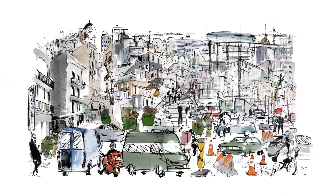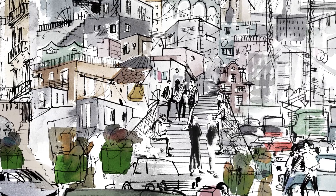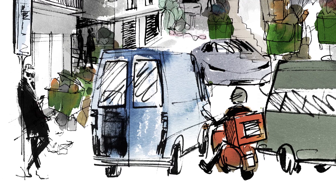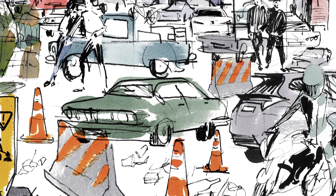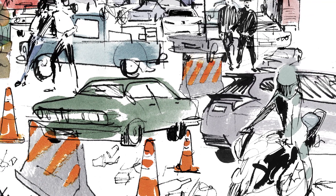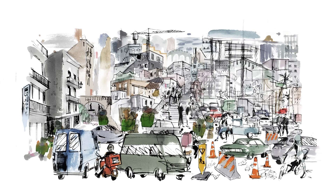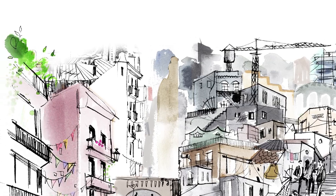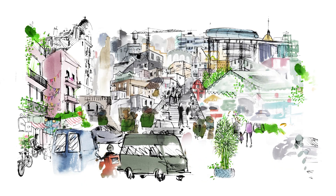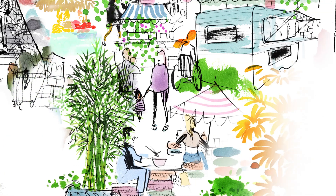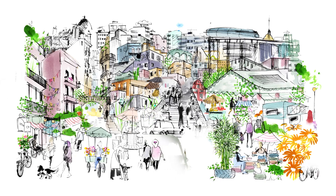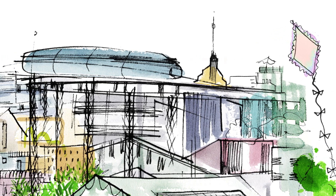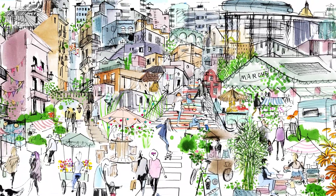Remember what the space looked like at the beginning? What is the likely result of the HerCity process? A place where everyone thrives, that is safe, has good livelihood opportunities, and is ecologically sustainable. That's what HerCity could look like.